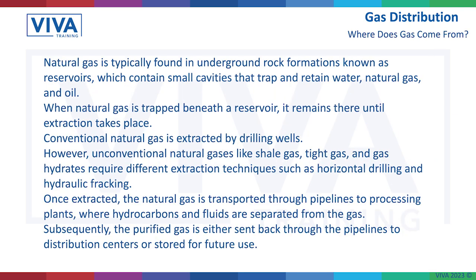Natural gas is typically found underground in rock formations — in reservoirs which contain small cavities that trap and retain water, natural gas and oil. Sometimes as part of the oil extraction, the natural gas is burnt off. Sometimes you'll see on television a platform extracting oil with a burn stack — a big flame on the top — and that's the natural gas being burnt off because there's so little of it, it's not cost effective to harvest it.